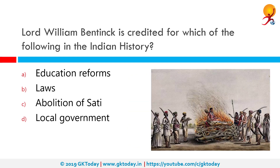Lord William Bentinck is credited for which of the following in Indian history? The correct answer is the Abolition of Sati. The Bengal Sati Regulation, which banned the Sati practice in all jurisdictions of British India, was passed on December 4, 1829 by the then Governor-General Lord William Bentinck. The regulation described the practice of Sati as revolting to the feelings of human nature.